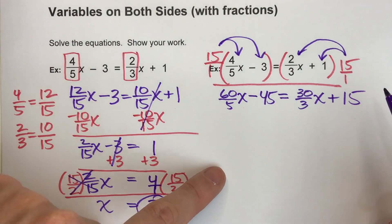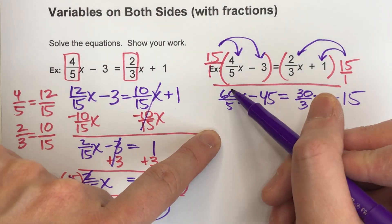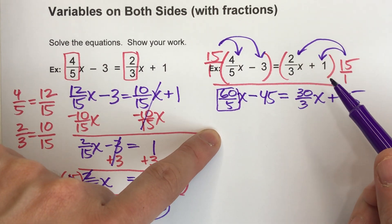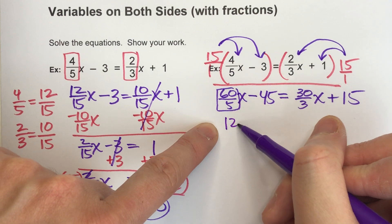Now first you're thinking, that seems like a very ugly, scary problem. But it turns out this isn't. Because 60 divided by 5 is a whole number. 60 divided by 5 is just 12. So this is just 12x.